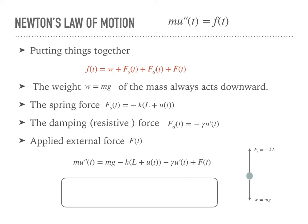To simplify, at the equilibrium or resting position the mass is not moving, so the weight and spring force cancel each other: mg − kL = 0. This information simplifies the equation down to a second-order differential equation with constant coefficients. If there is an external force, you have a non-homogeneous system; if the external force is zero, you have a homogeneous system.